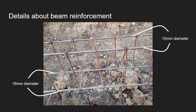The logical orientation of a beam is as shown. The rods above are of 12 mm diameter while the ones below are of 16 mm diameter. Why do you think is the difference between their diameter?